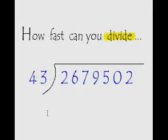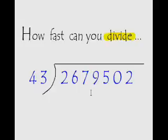Now we'll be learning the EasyCal trick to divide numbers really fast. My question to you is very straightforward: how fast can you divide this huge 7-digit number by 43? I'm giving you 12 seconds to do it. Your time starts now — give it a try.